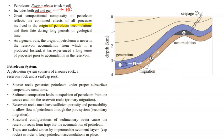Normally the origin of petroleum is never in the reservoir accumulation from which it is produced. This means that if we are looking at a rock from where the petroleum is being extracted or produced, it is a general rule — except in some cases — that the oil which we are producing from a rock was not generated in that rock.